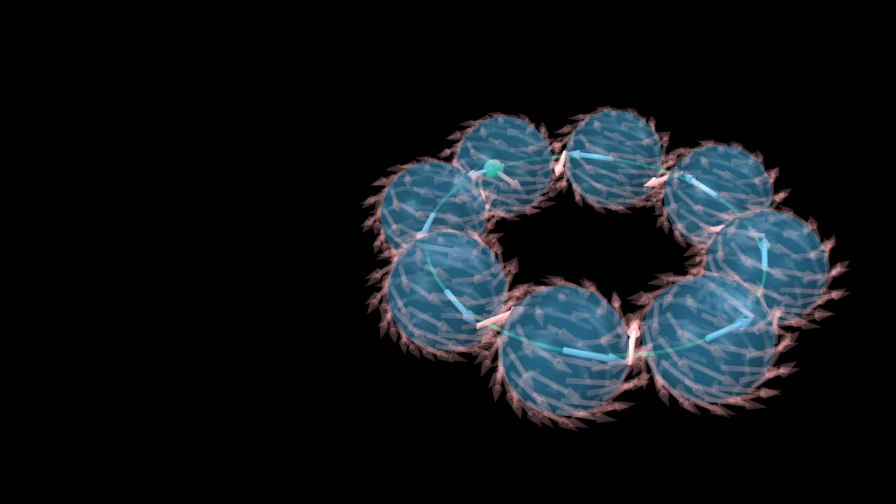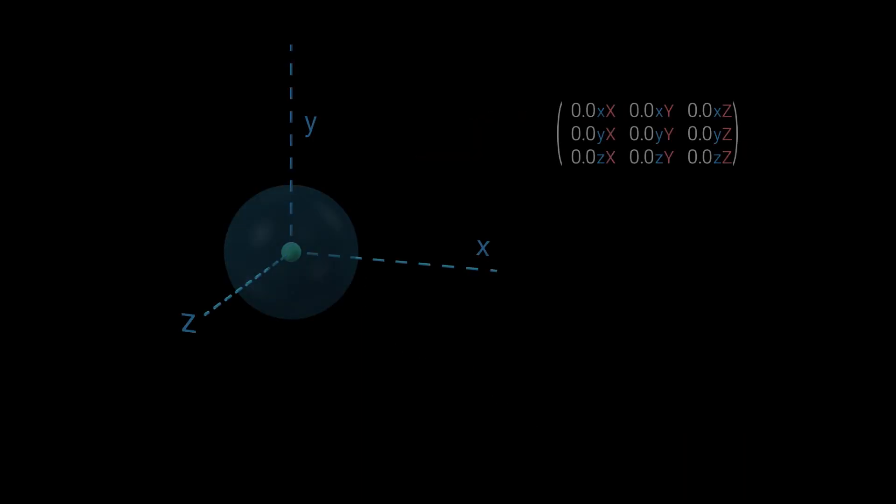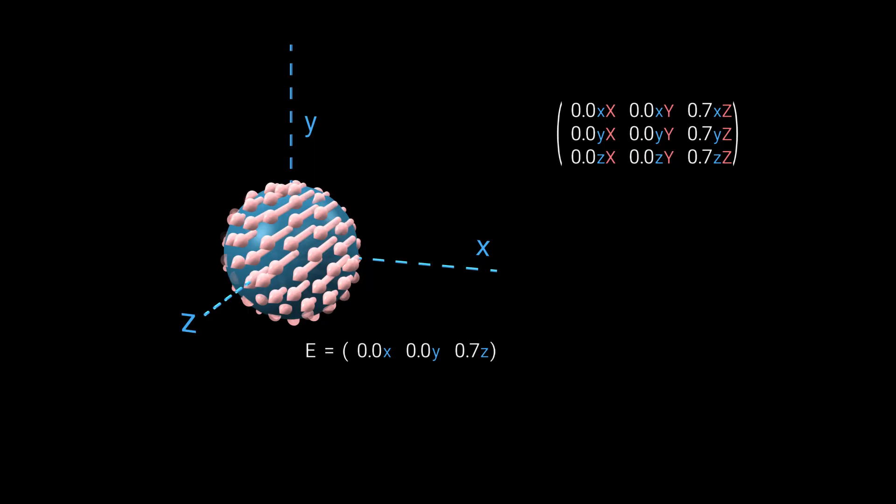But with tensor fields, we'll be able to take this principle a big step further, as we'll see in a few minutes. Now let's ask, can we use this tensor to represent electric fields as well? Let's try to have it represent this electric field, pulling towards the Z direction. Recall the electric force is not affected by the particle's velocity. Our tensor should map all possible velocities to the same force.